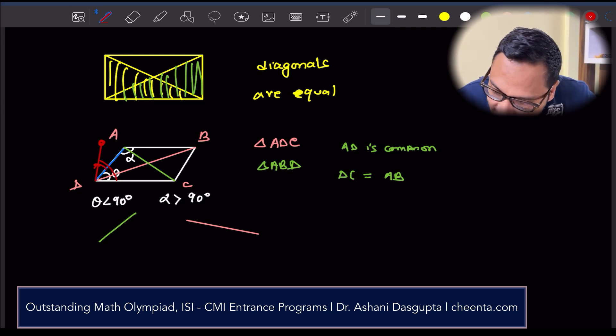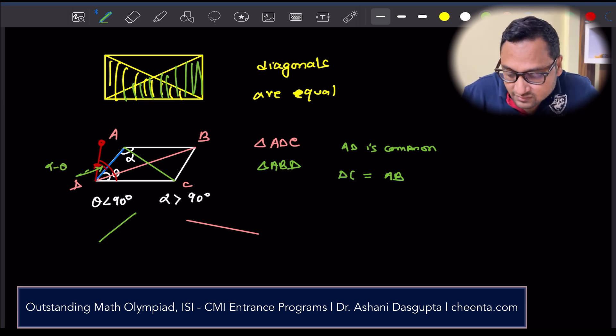This little angle will be alpha minus theta. This little angle is alpha minus theta. This is theta. Now what we have is, we can just join these two.